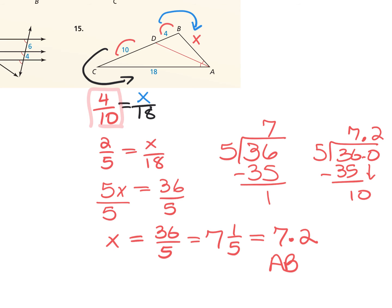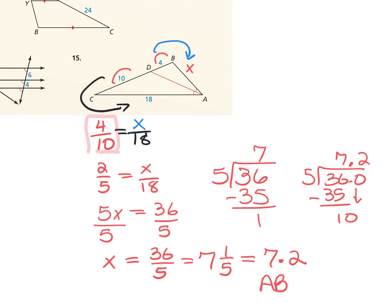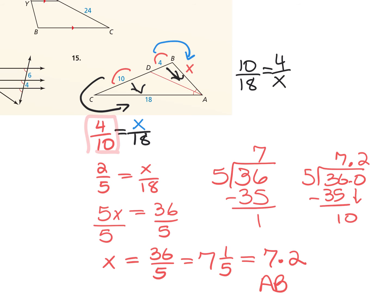You could also set up the proportion top to bottom: 10 over 18 equals 4 over x. If you reduce 10 over 18 to 5 over 9, you get the same thing to solve. Whatever you're more comfortable doing, find your technique and stay consistent. Either way, make it a decimal or mixed number — don't leave it as a fraction.